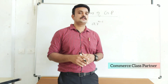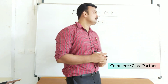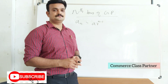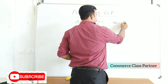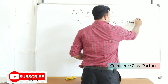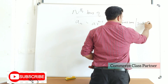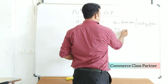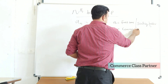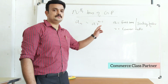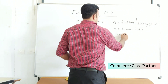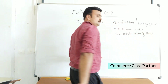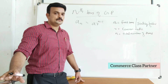Now let us see how to find the nth term of a GP. The nth term of GP is: Aₙ = A · r^(n−1). Here A is the first term, also known as the scaling factor; R is the common ratio; and n is the total number of terms.